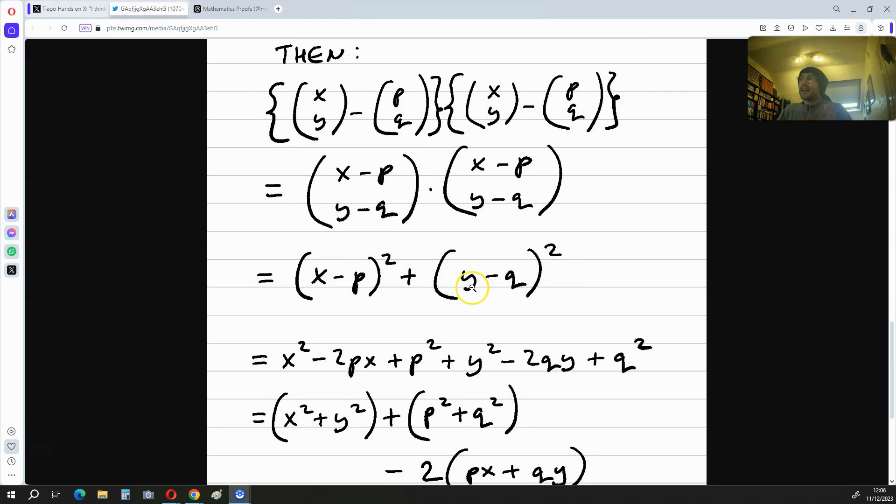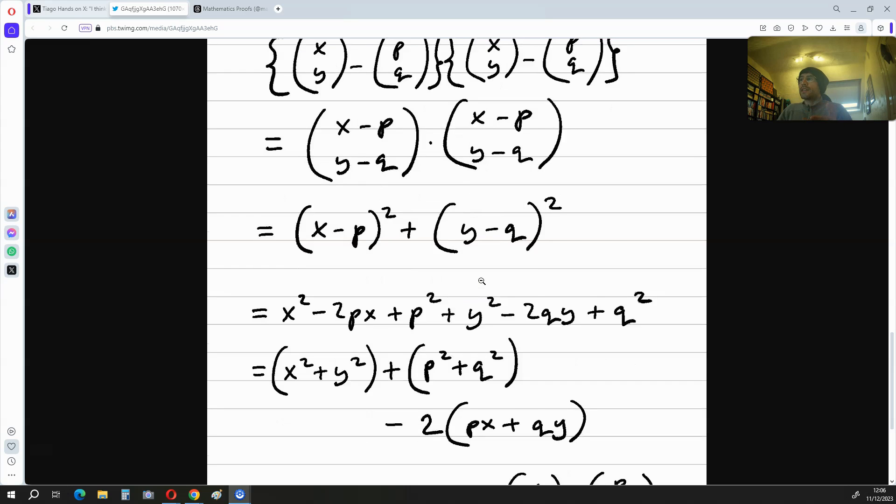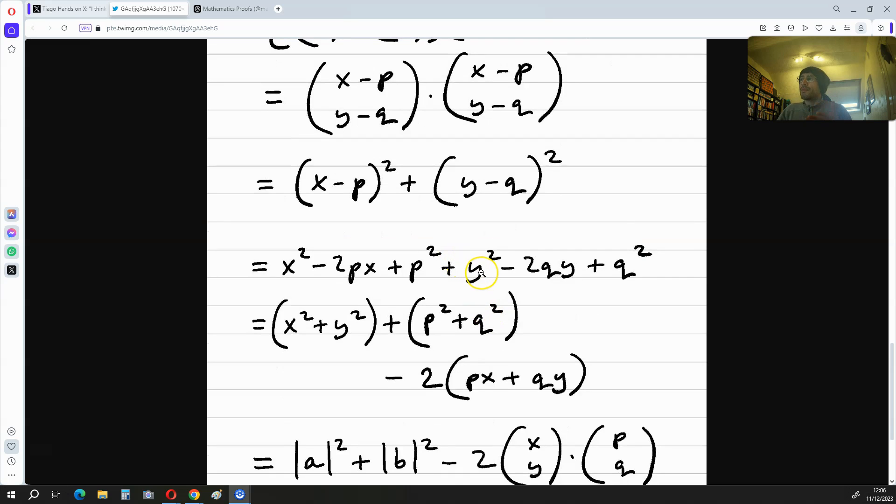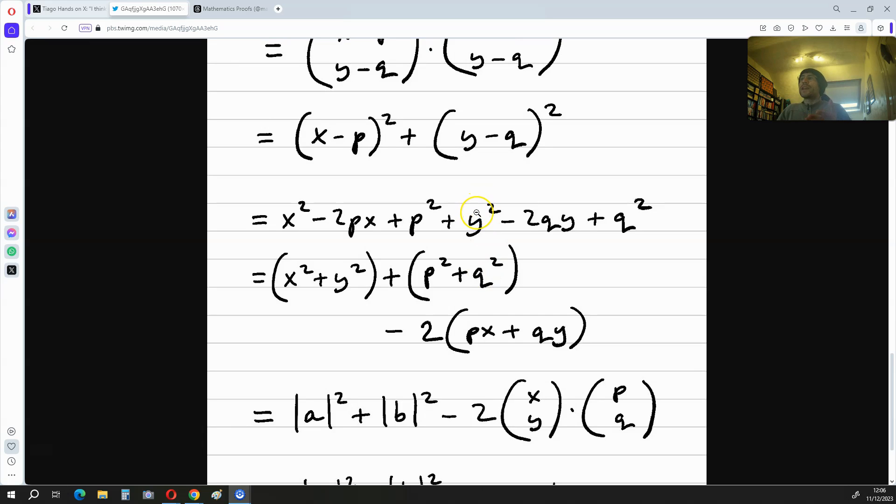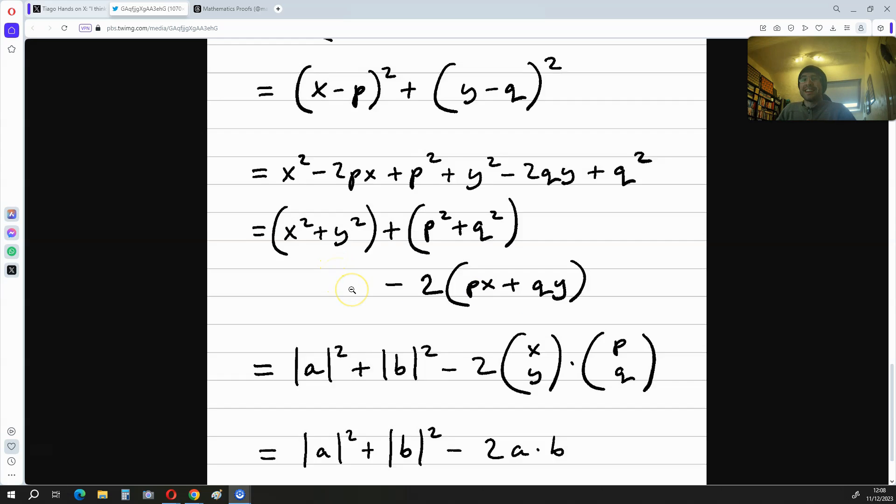If we expand what's inside these brackets, what we get is this below and we can simplify this to x squared plus y squared in brackets plus p squared plus q squared in brackets minus two times px plus qy.